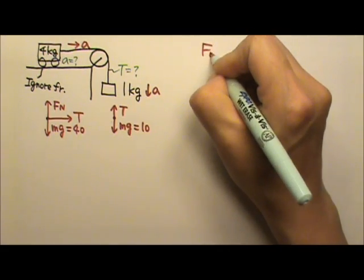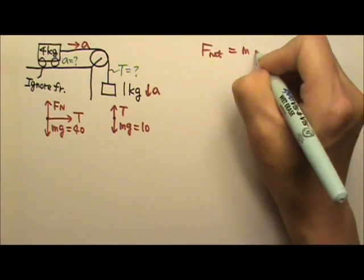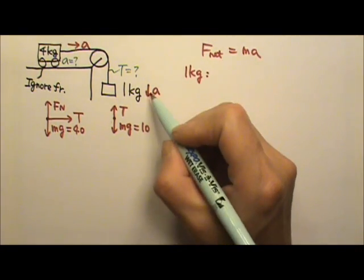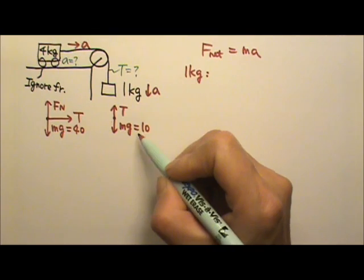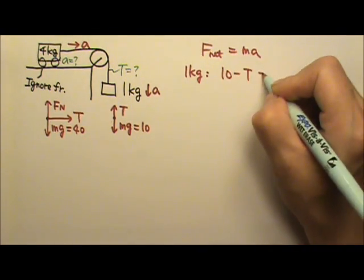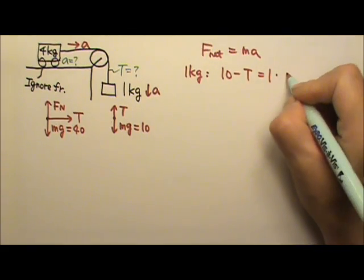So let's write the net force equals to M A. For the 1 kg box, the acceleration goes down. The downward force is bigger, so it's 10 minus T equals to 1 A.